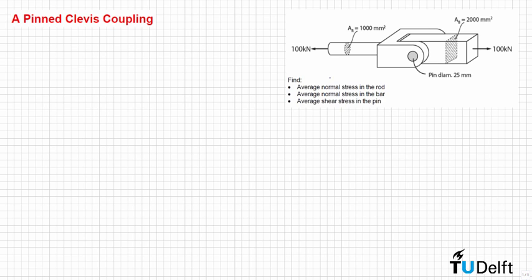In this problem we have this small structure here in which we have three elements: this rod with a circular section, this bar with a squared section, and these two elements are joined together through this pin with diameter equal to 25 mm.